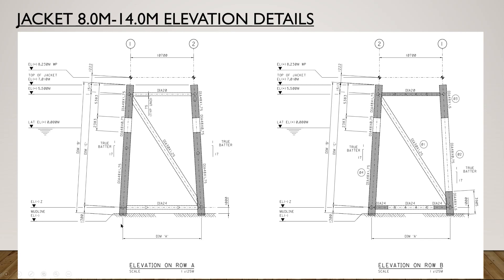The elevation is shown in negative values below the LAT. LAT is zero, and positive elevations are above it, negative below. For example: LAT is 0.0, then 5.5 m elevation, top of jacket is 7 m, and work point elevation is 8 m. These are the main jacket legs with horizontal and vertical bracings in between. The bottom is called the mud line horizontal bracings.